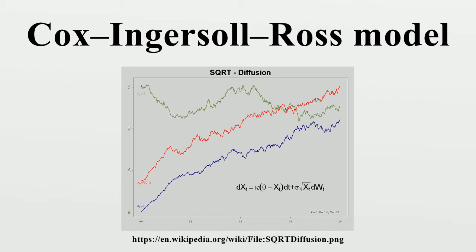Due to mean reversion, as time becomes large, the distribution will approach a gamma distribution with the corresponding probability density.